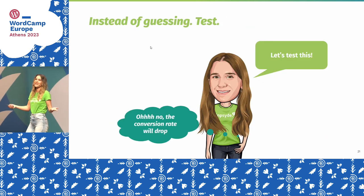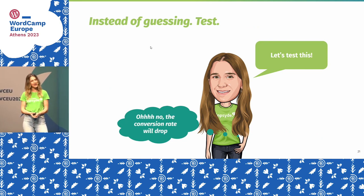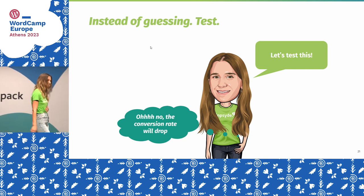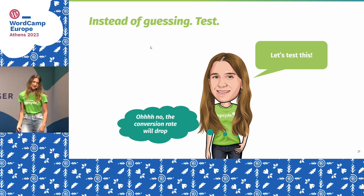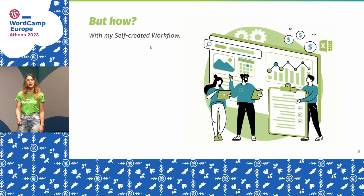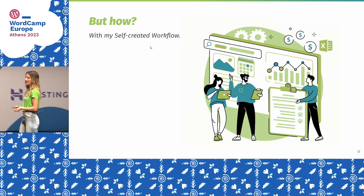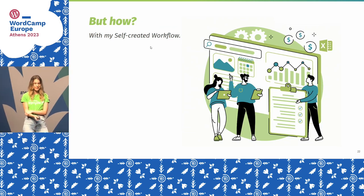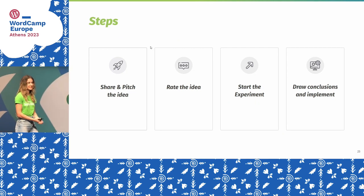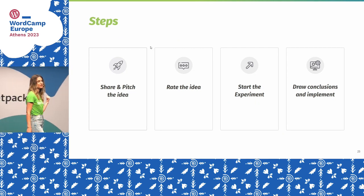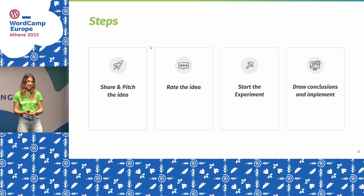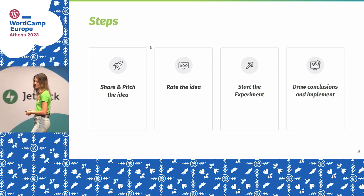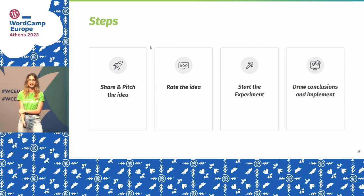So instead of guessing, I said to the sales team: we will test this. My gut feeling said it would not work, but let's test it anyway. And with the workflow I created together with my team, we approached this systematically. The workflow has different steps: first, share and pitch the idea; then rate the idea; then start the experiment; and finally draw a conclusion and implement the test into the website.